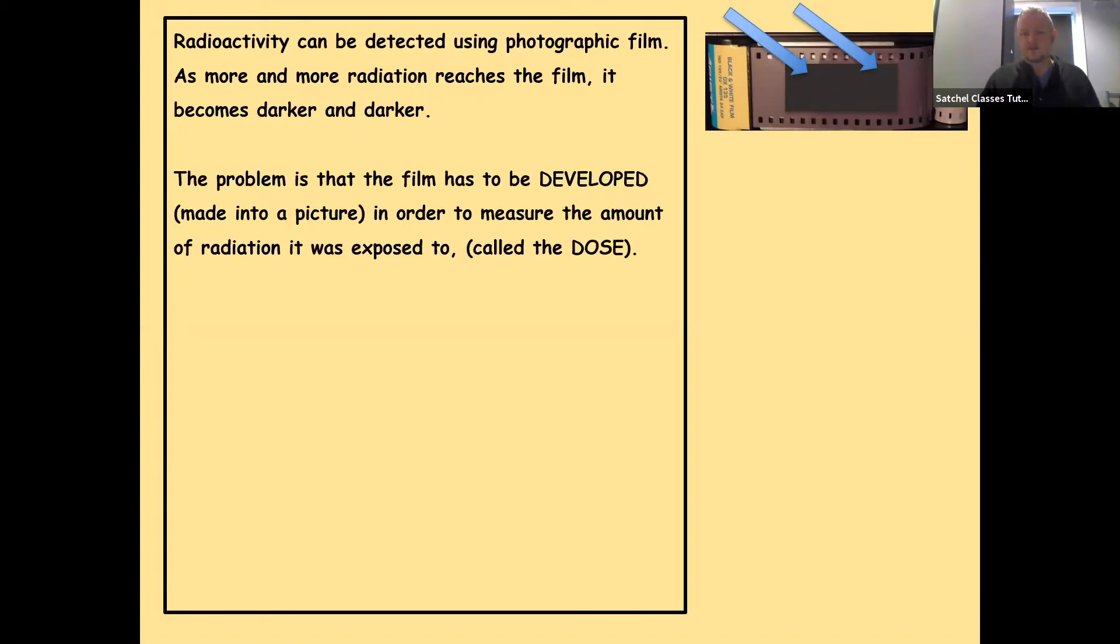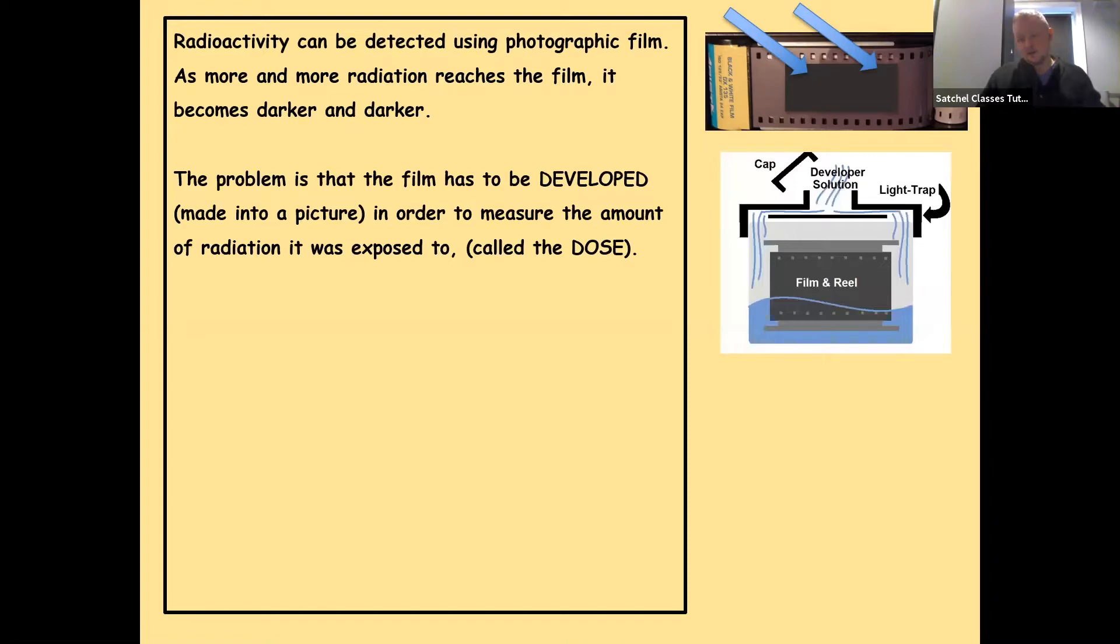The problem with this is that the film has to be developed or made into a picture in order to measure the amount of radiation it was exposed to, which is called the dose. On the side there we've got the idea of film and reel in a developer tank with a developer solution, and this fixes the image permanently.